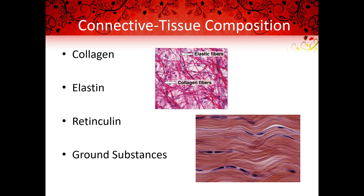Mobility is determined by the composition of connective tissue and the orientation of various soft tissue structures. Connective tissue is comprised of two primary structures: cells and the extracellular matrix. The fibroblasts are some of the most important connective tissues, and the cells that create fibroblasts include collagen, elastin, reticulin, and ground substances. These components comprise the extracellular matrix, and their quantities vary according to the specific tissue structure. For example, there is more collagen in a ligament and more elastin in the skin.